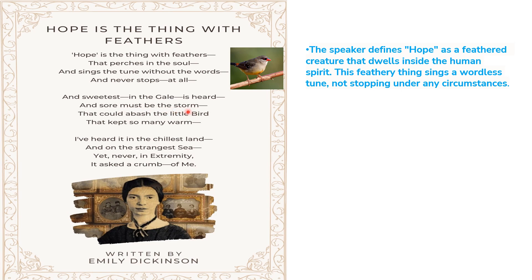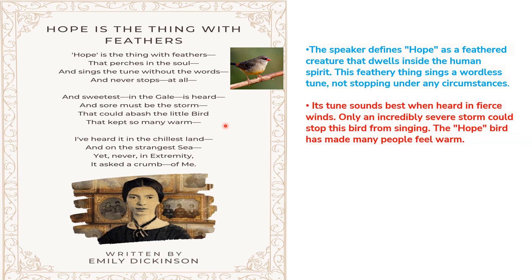'And sore must be the storm' — meaning a very severe, very fierce storm — 'that could abash the little bird that kept so many warm.' Even if the storm is very severe, it will not disturb the little bird. Here the little bird is hope, that kept so many warm — meaning so many people got relaxation with this hope. They felt warmth in times of difficulties, but the storm cannot disturb the bird. Its tune sounds best when heard in fierce winds. Only an incredibly severe storm could stop this bird from singing. The hope bird has made many people feel warm.